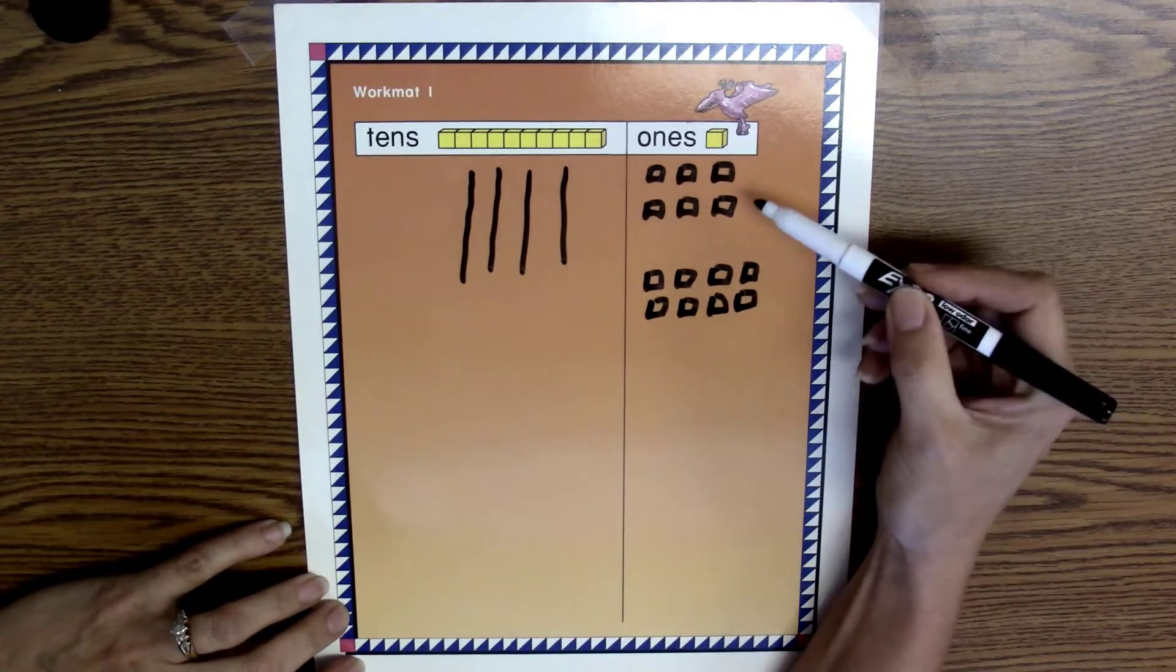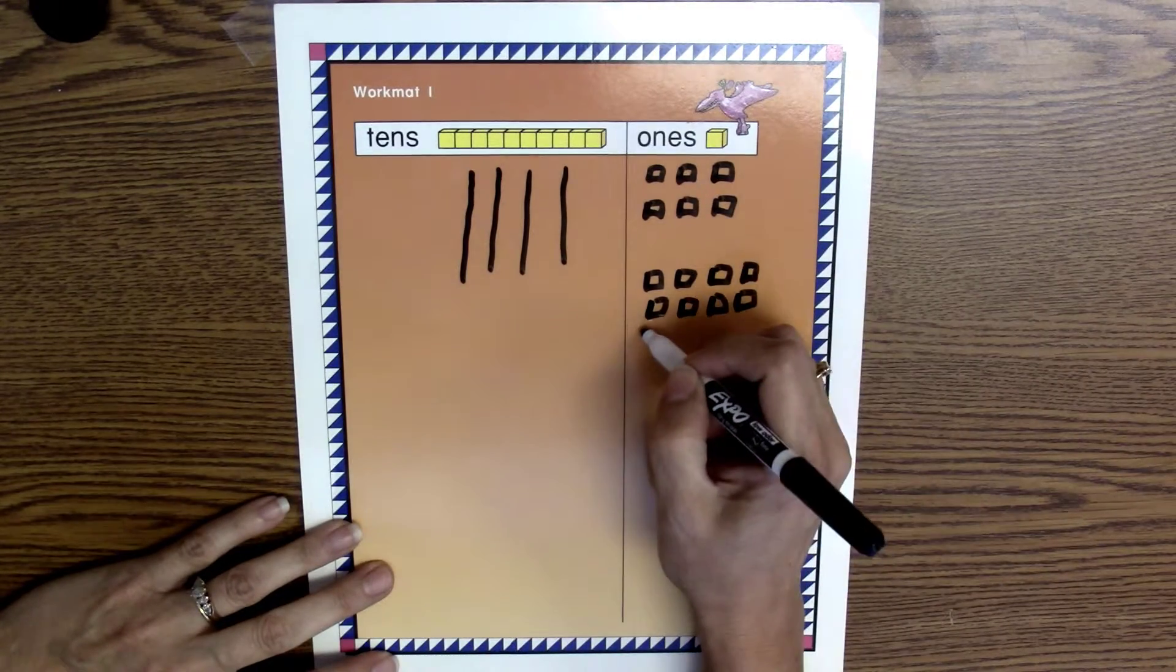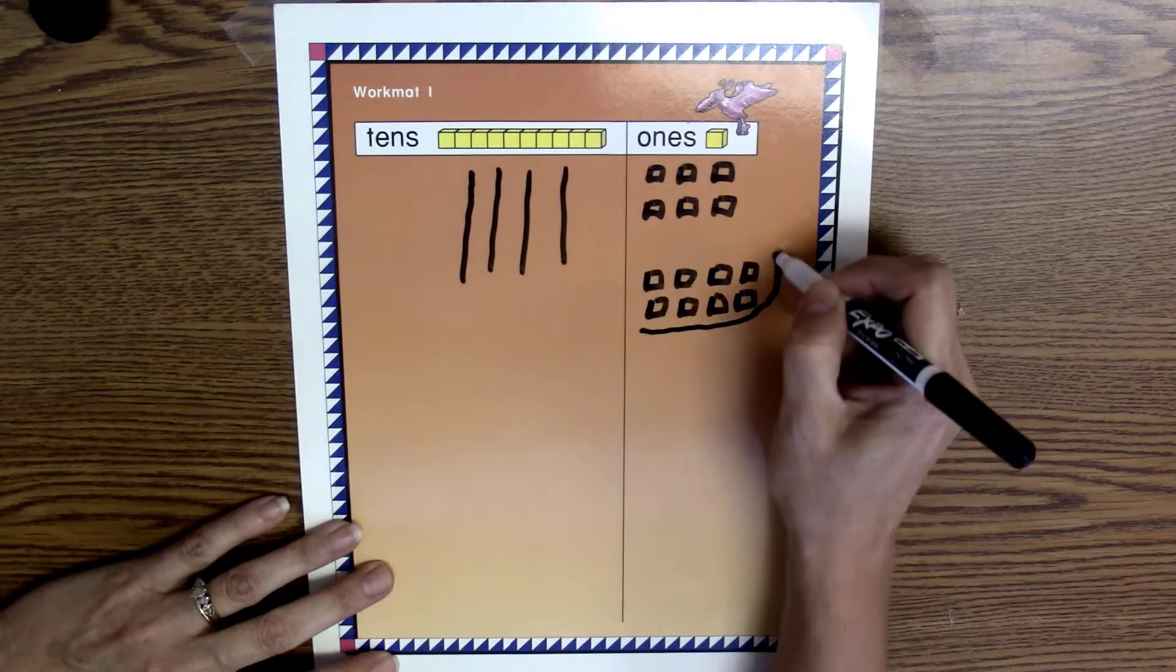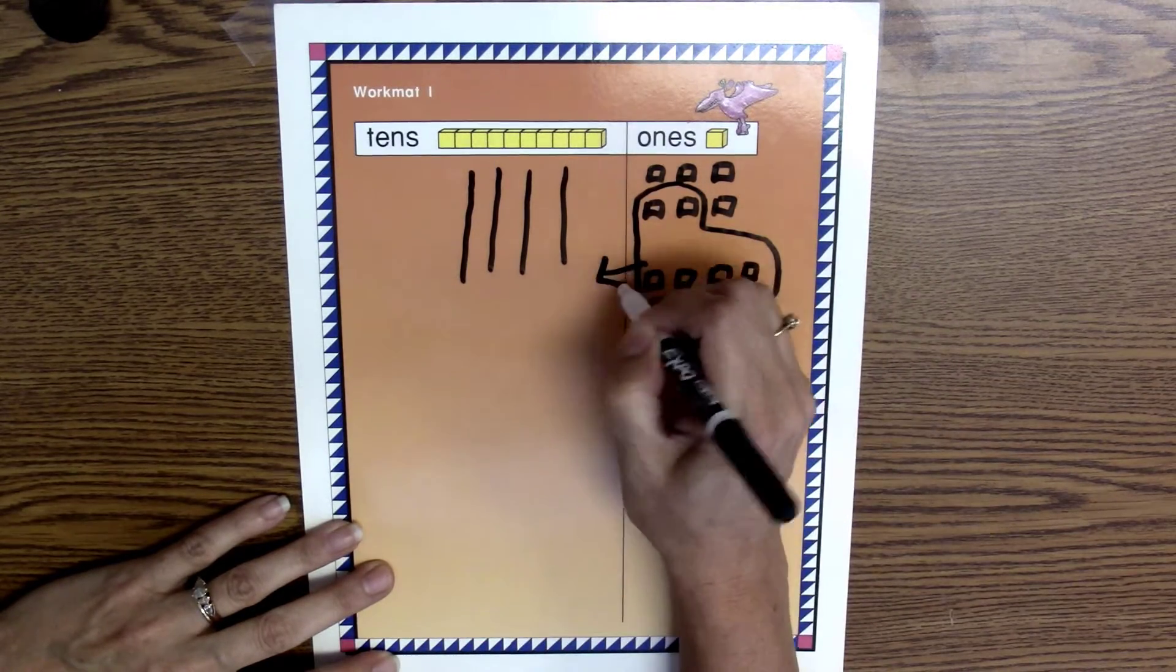So now I have 14 ones, and I can make a new 10 using 10 of those ones. So I'm going to circle 10 ones, and I'm going to make a new 10.